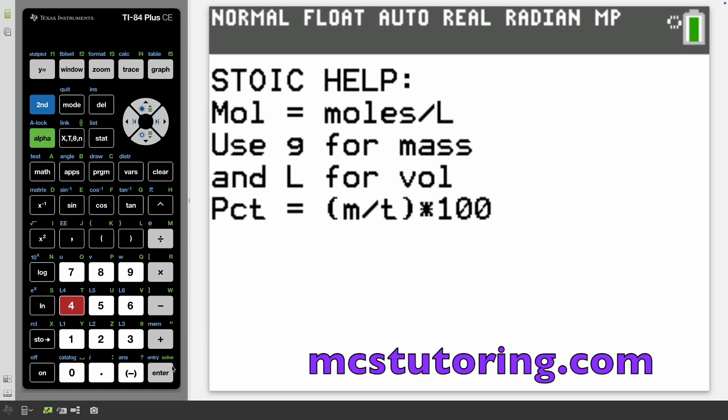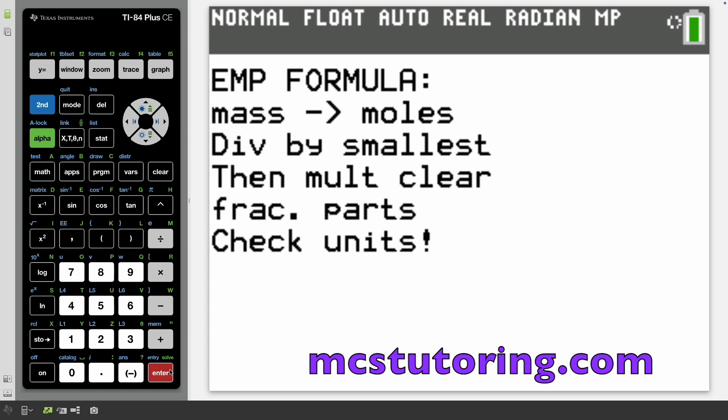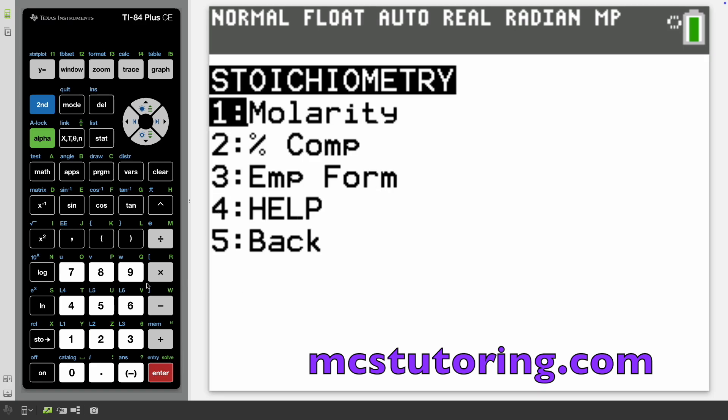If you'd like me to write out more on the help menus, let me know. I do read all the comments and I adjust my game appropriately. There's a second page. Empirical formula: mass goes to moles, divide by smallest, then multiply to clear fraction parts. Check your units.